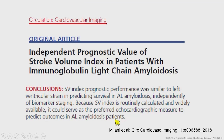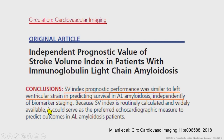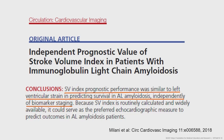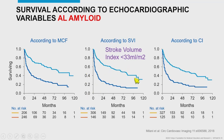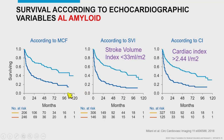We stage amyloid patients with troponins, BNPs, ejection fraction, and now stroke volume index. Stroke volume index performance was similar to strain in predicting survival in AL patients, independent of biomarker strain staging. MCF is a ratio of stroke volume to LV mass, but a simpler measure is stroke volume index. A stroke volume index above versus below 33 mL/m² predicted outcomes in AL amyloid. Similarly, a cardiac index above versus below 2.4 predicted outcomes. Doppler-derived variables like stroke volume integrate both systolic and diastolic function and are powerful predictors of outcomes.